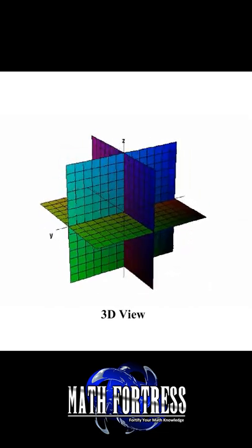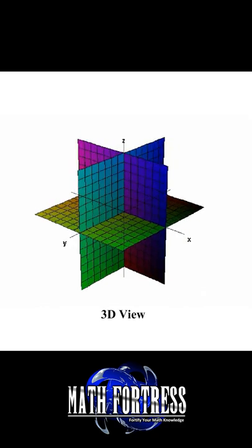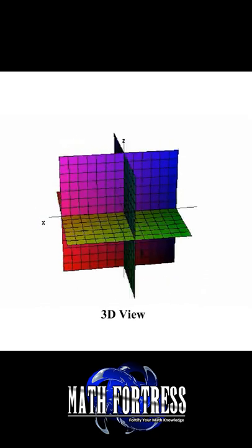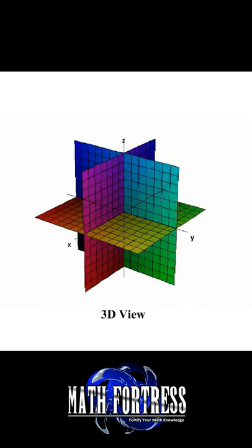The first octant is determined by the positive axis. If you are having a hard time visualizing this, just look at any bottom corner of a room. That's essentially a visual representation of the first octant.